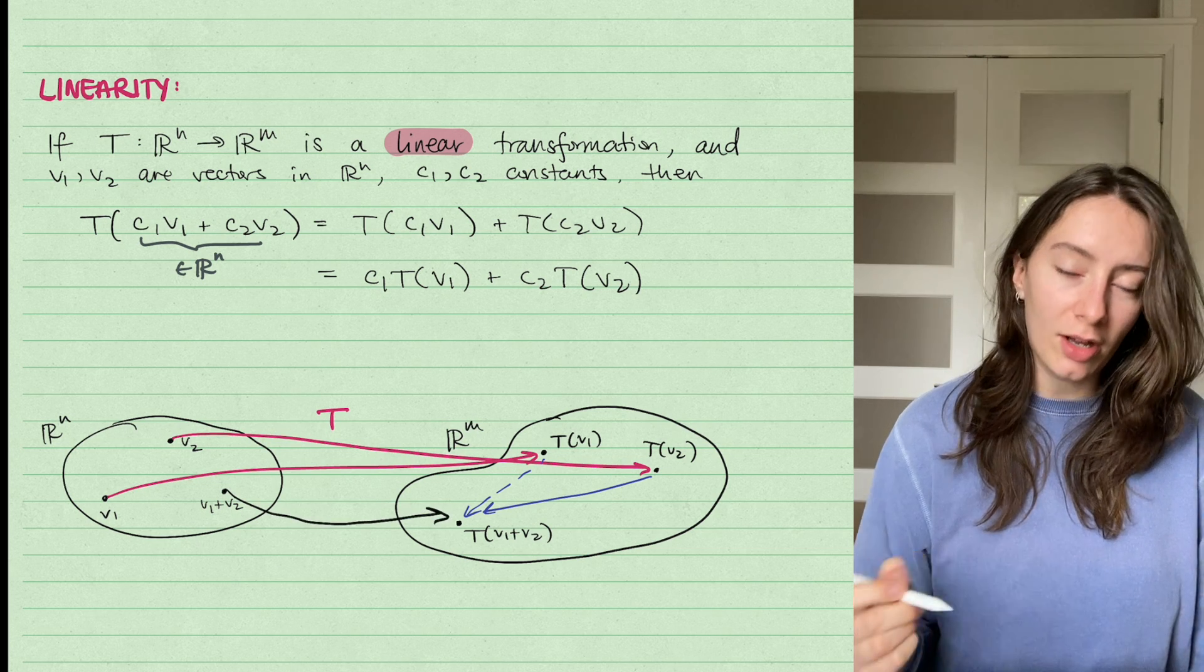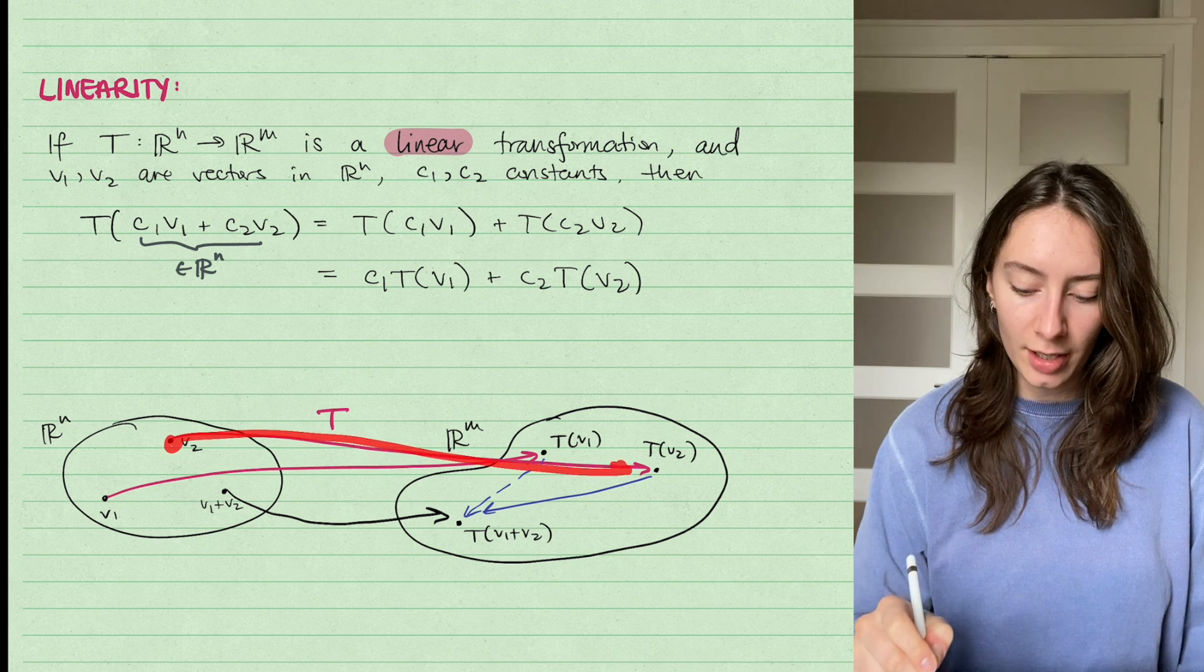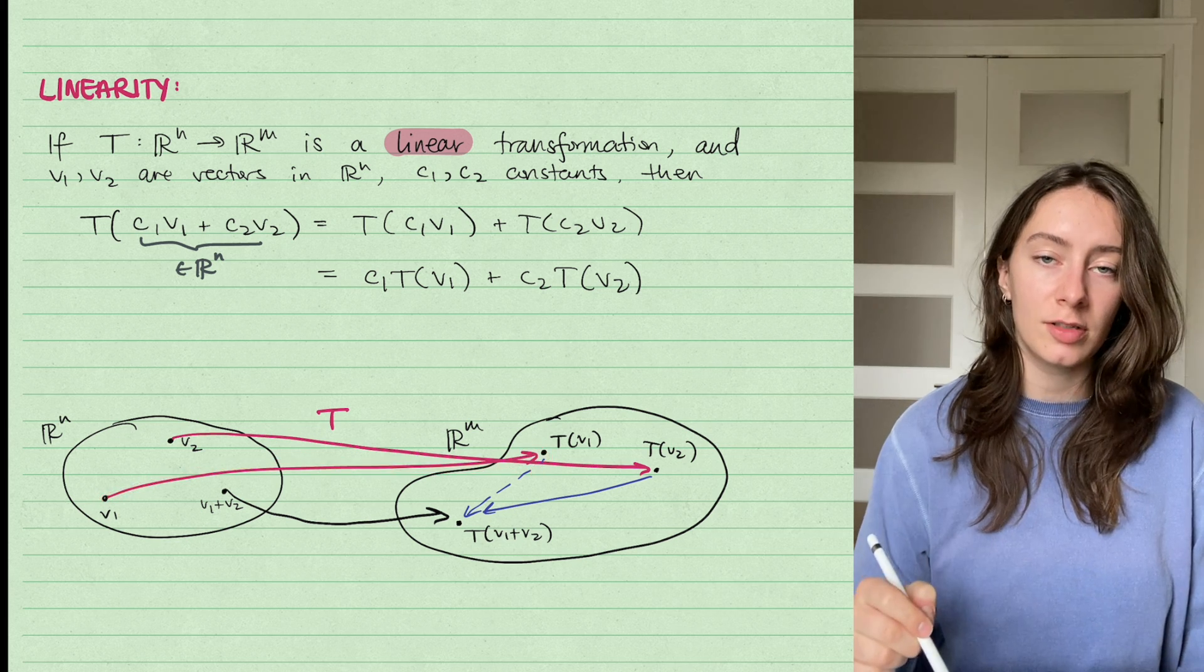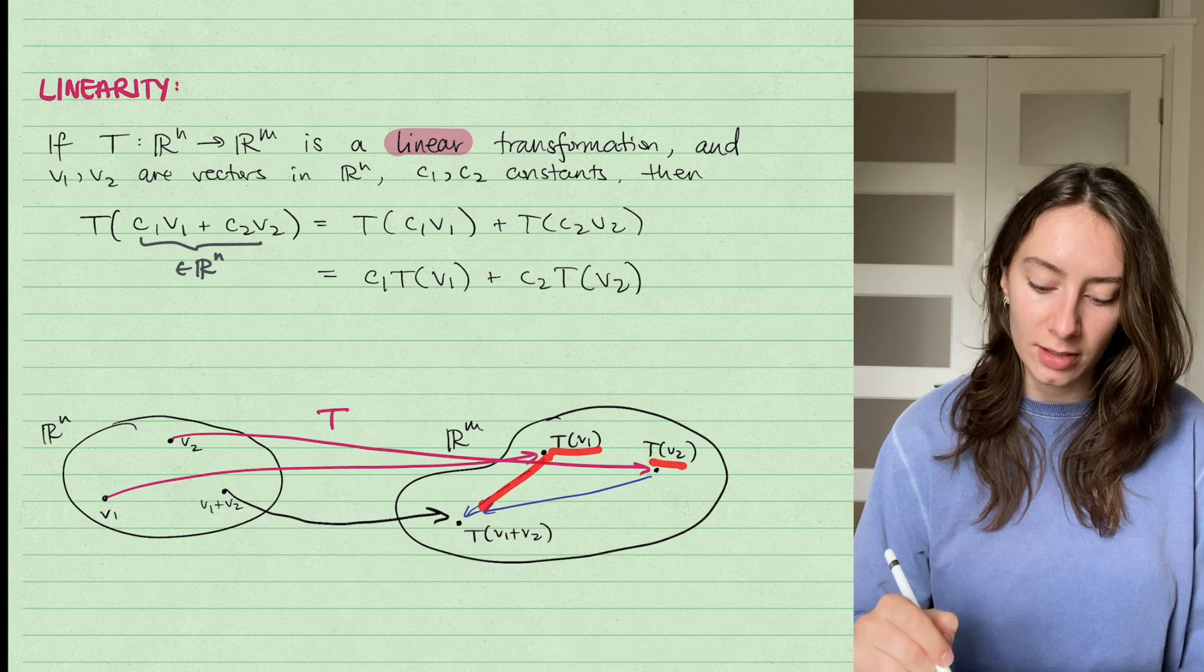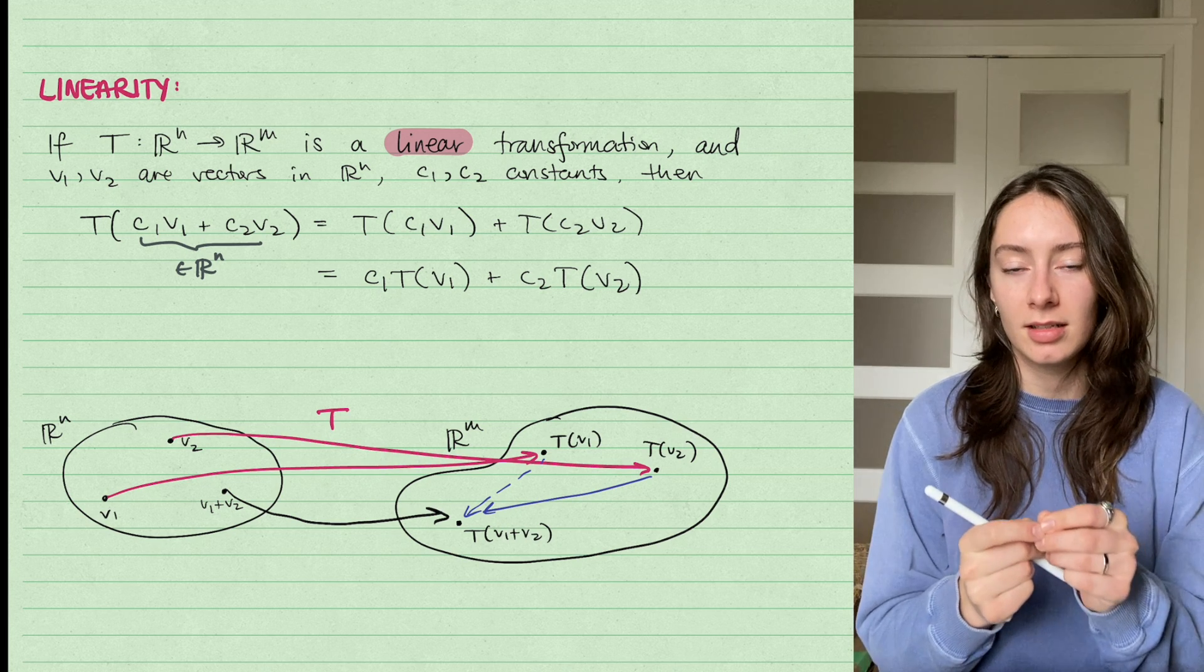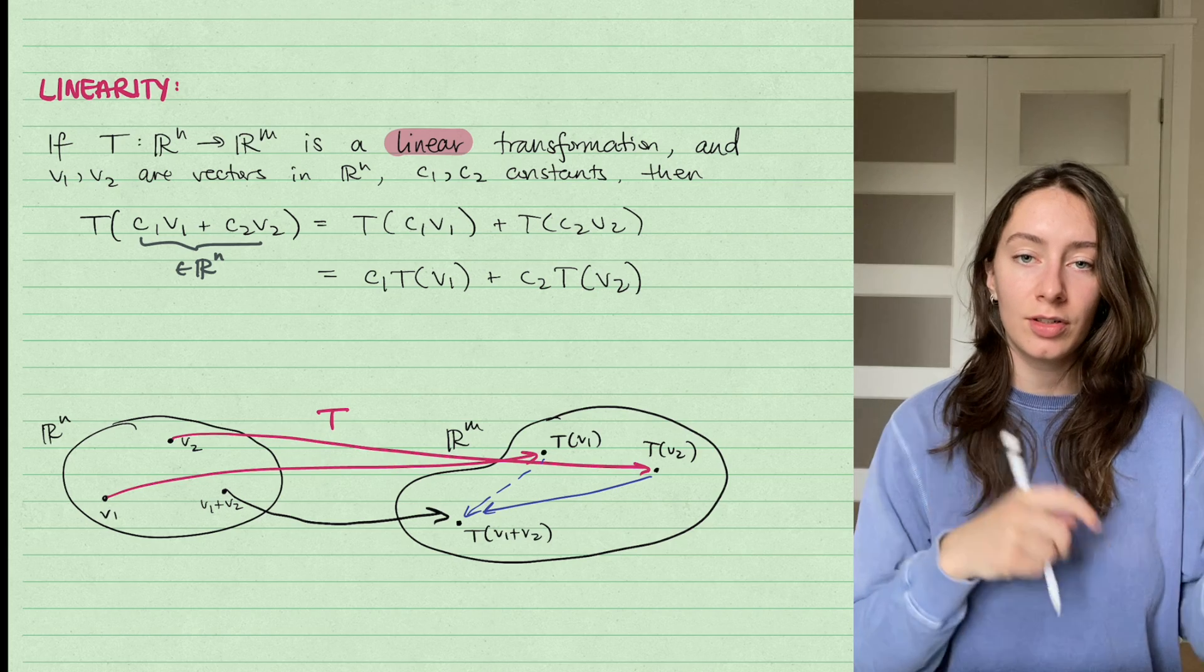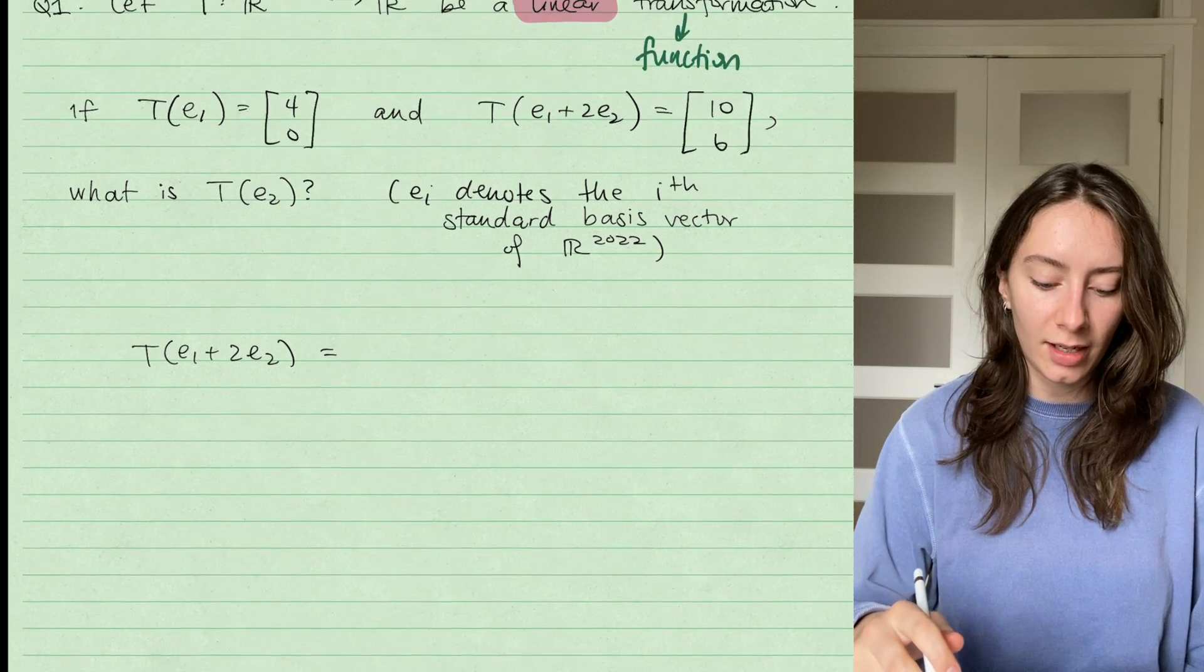But I could also think about where do those vectors map to under the transformation first. So first bring them into the output space R^m, and then add those vectors to get a resulting vector T(V_1) + T(V_2). It's saying I can take two paths to get to the answer. It doesn't matter if I first add in the domain or if I first do the transformation and then add in the range. So that's the linearity.